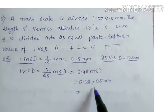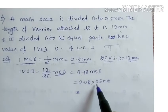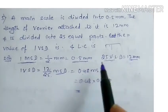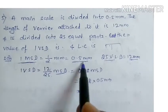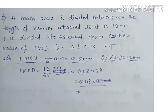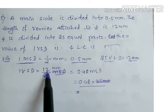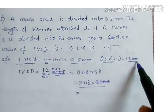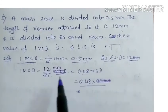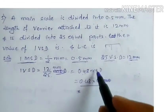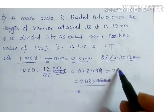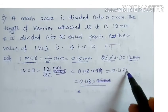The answer is 0.48. MSD is in mm. So 12 mm divided by 25 gives 0.48. This is mm. So what is our answer? 0.48 mm.